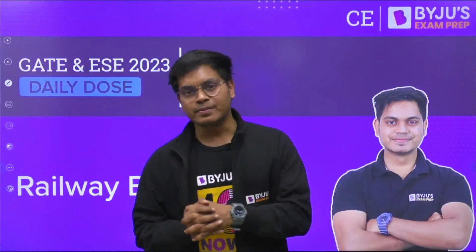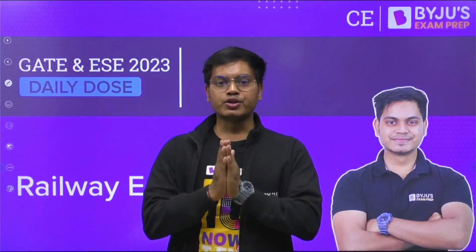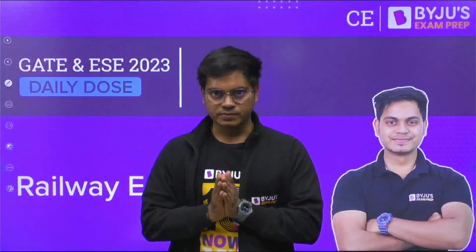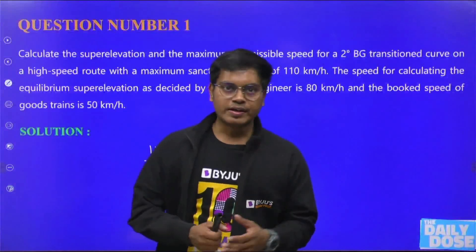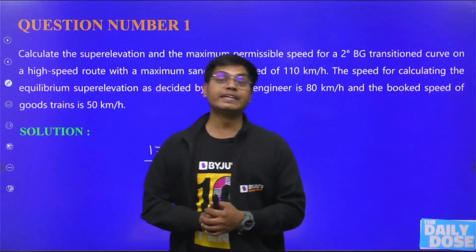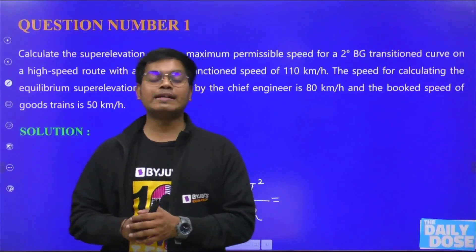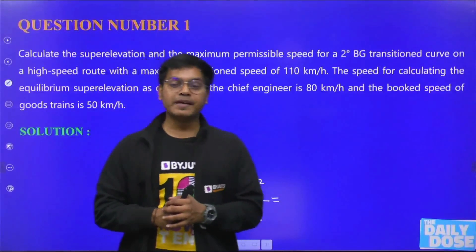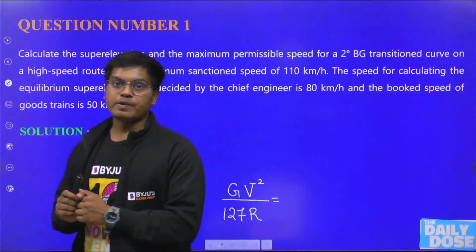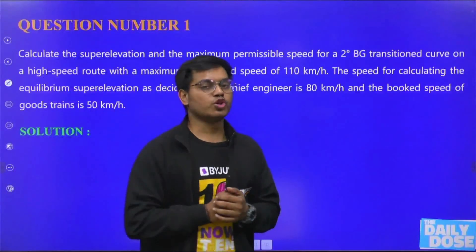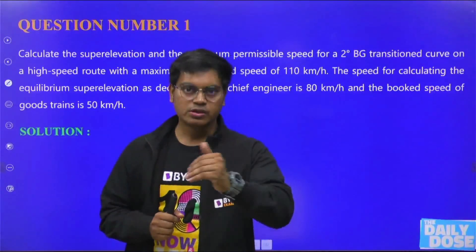If you are preparing for the GATE examination and want to prepare railway engineering, these two questions are going to be very important. The first question asks: calculate the super elevation and the maximum permissible speed for a two-degree broad gauge transition curve on a high speed route with a maximum speed of 110 km/h. The equilibrium super elevation speed decided by the chief engineer is 80 km/h and the booked speed of the train is 50 km/h.